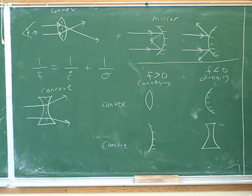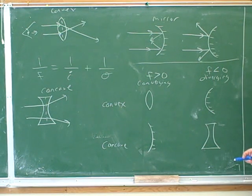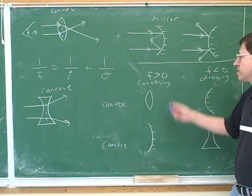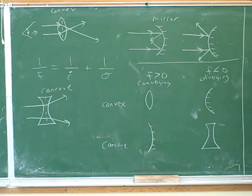So it doesn't really do much good to learn whether something's convex or concave because that doesn't really tell you directly what the sign of the focal length is. It's much more convenient to focus on whether something's converging or diverging because converging always means positive focal length for either lenses or mirrors. And diverging always means negative focal length.